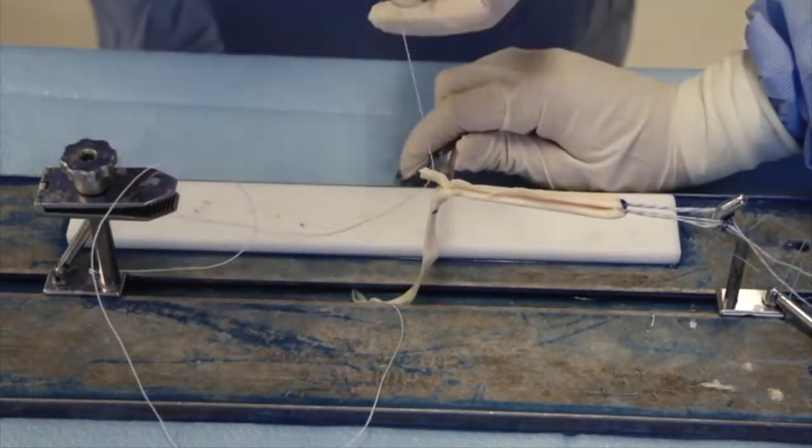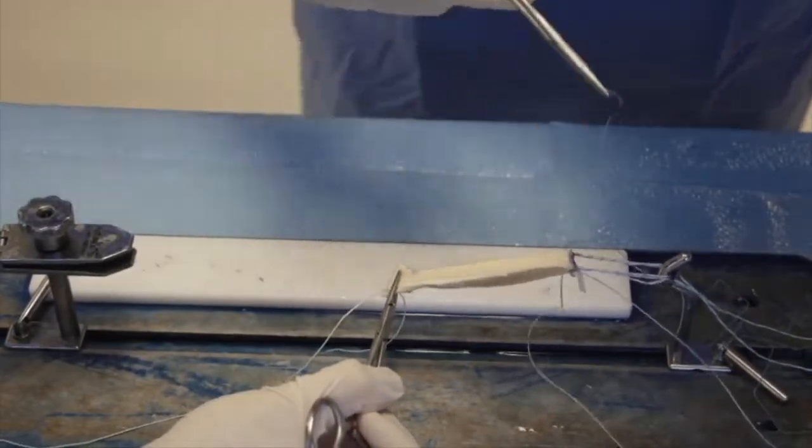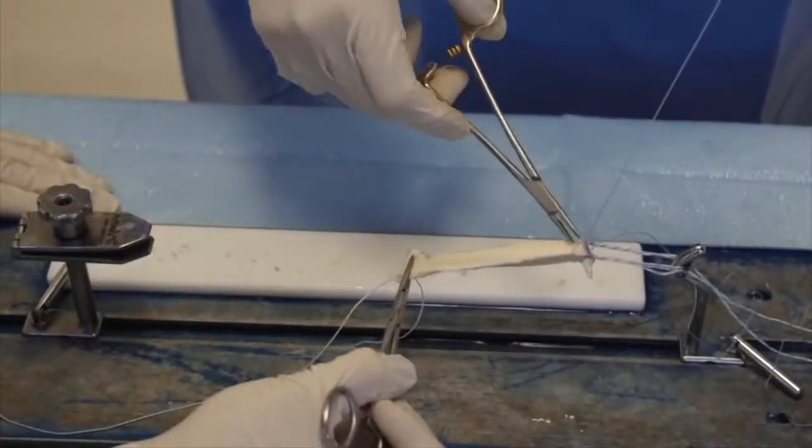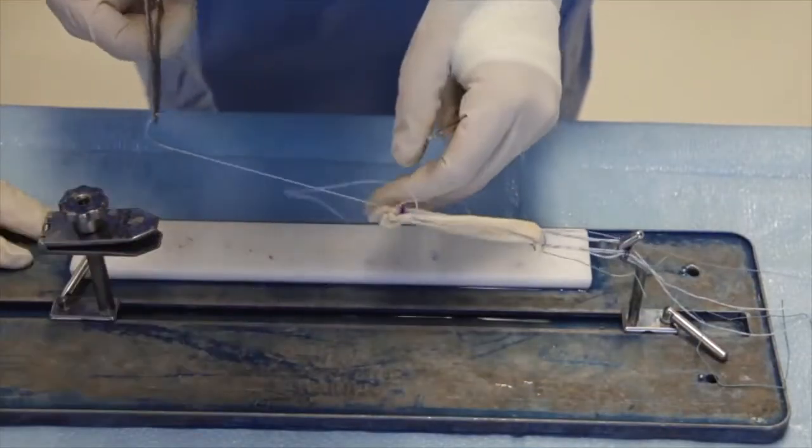A stitch at each end of the tendon is made with a non-absorbable suture leaving a tail. The needle is then passed through the other two strands of the graft. The same procedure is then repeated at the other end.